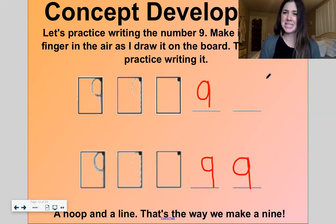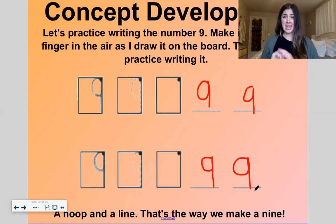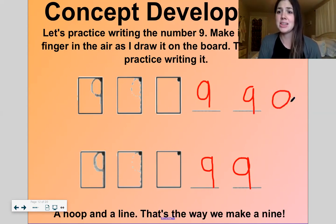Now, some people might go a hoop and a line. That's the way we make a nine. But I like to just use one stroke and not pick my pencil up. A hoop and a line. See how I just trace that same thing back? I think that's fine.